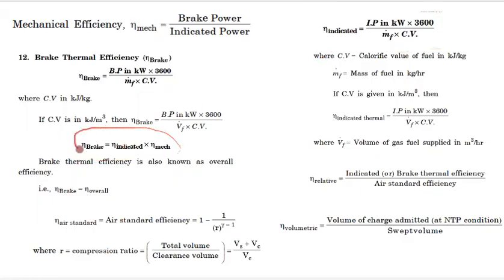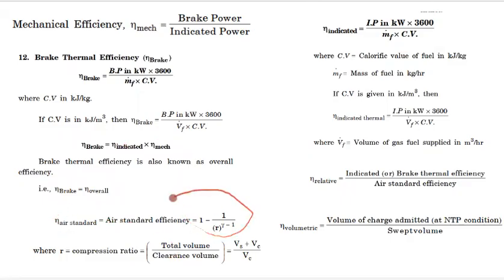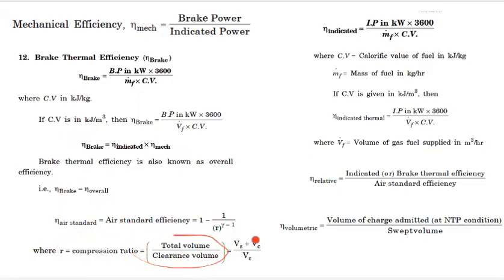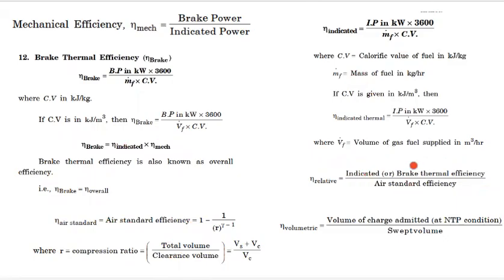We have the break thermal efficiency and the overall efficiency. Then we have the air standard efficiency, whose equation is 1 minus R raised to the power gamma minus 1, where R is the compression ratio equal to total volume divided by clearance volume. Relative efficiency equals IP divided by air standard efficiency; break thermal efficiency equals BP divided by air standard efficiency.